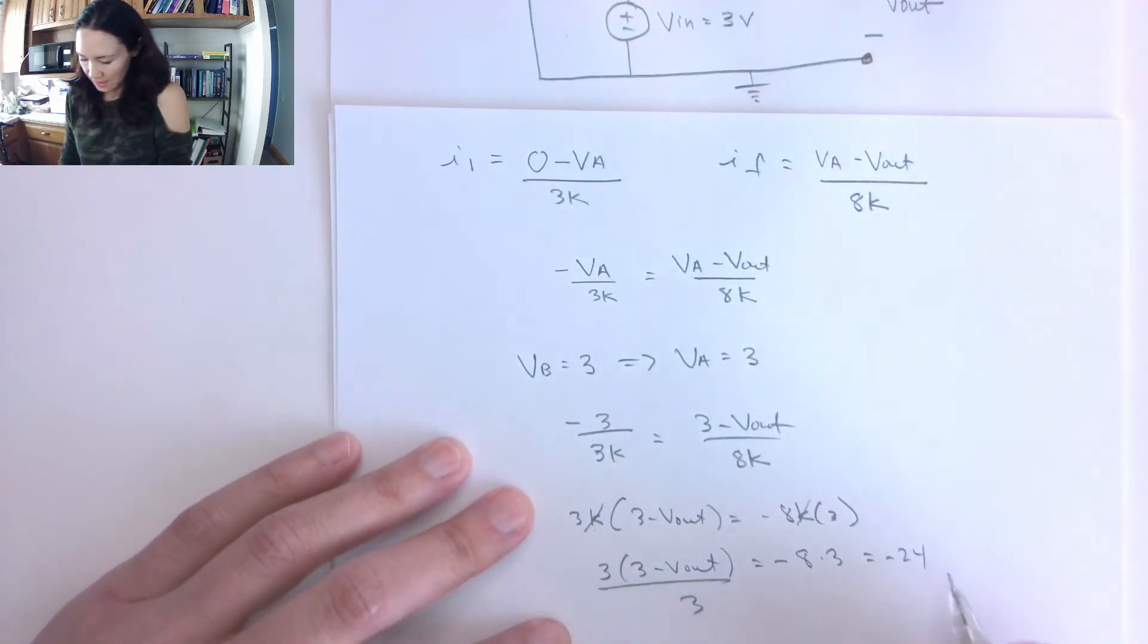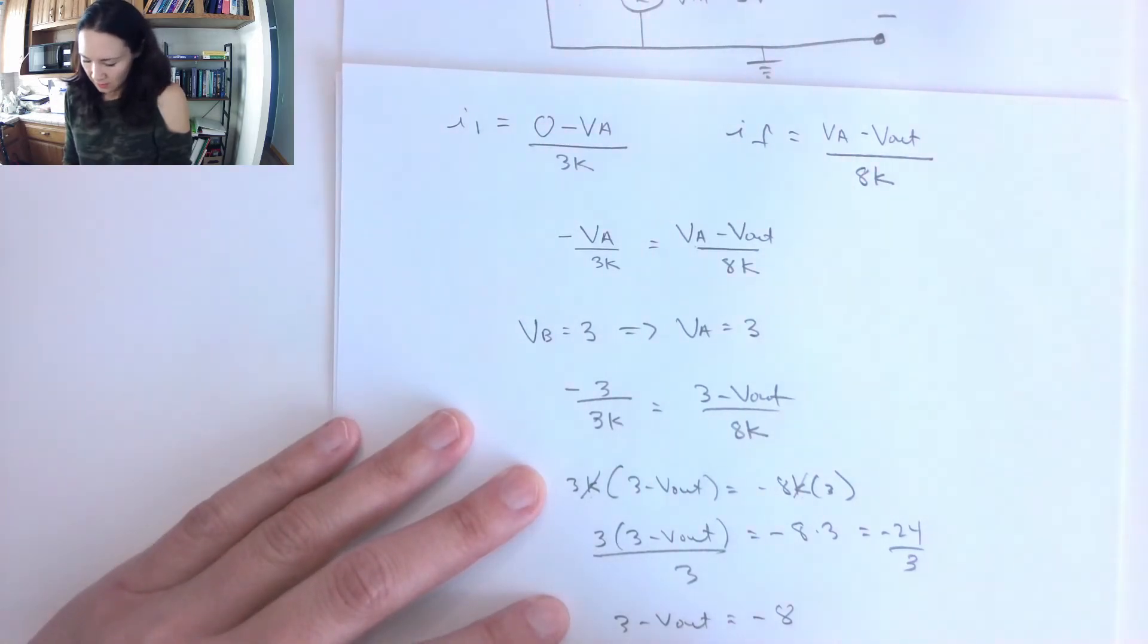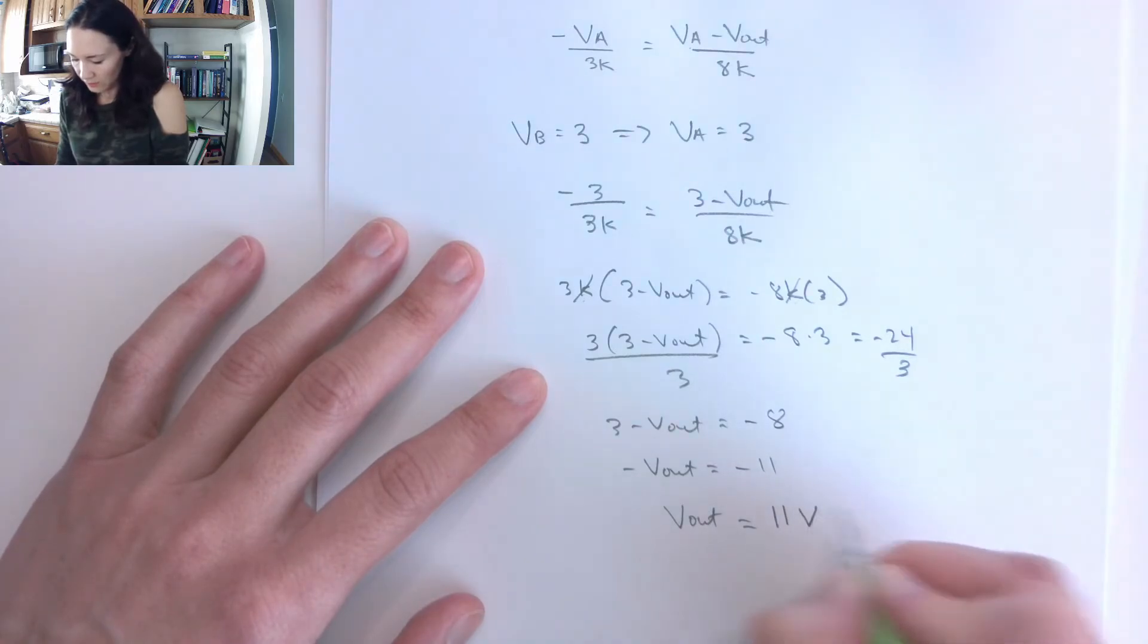I can divide that by 3. 3 minus Vout is equal to negative 8, so that means that negative Vout is equal to negative 11. So Vout is positive 11 volts.